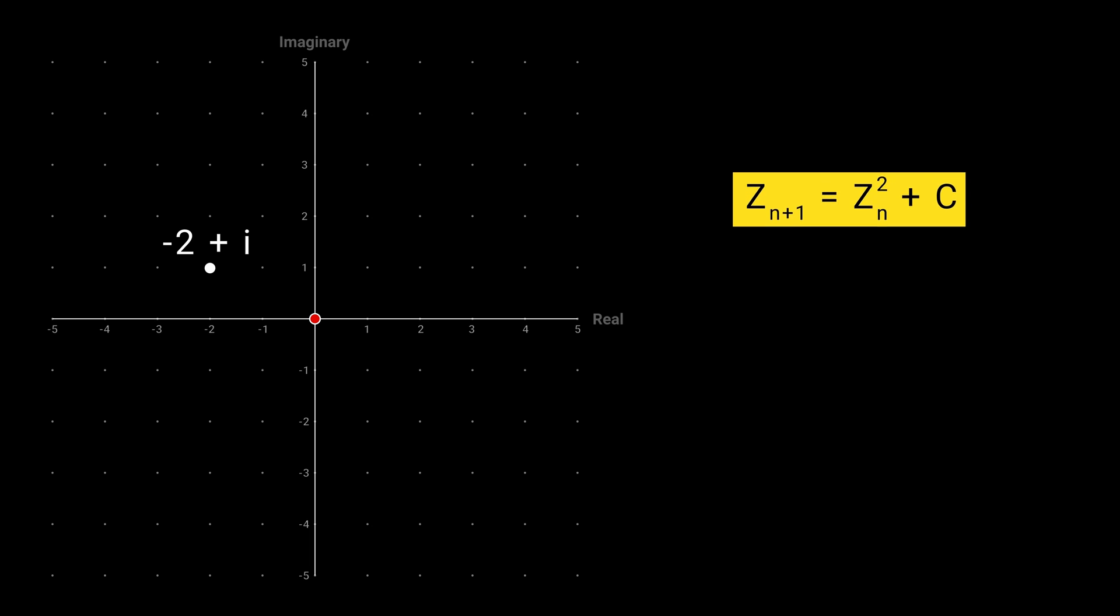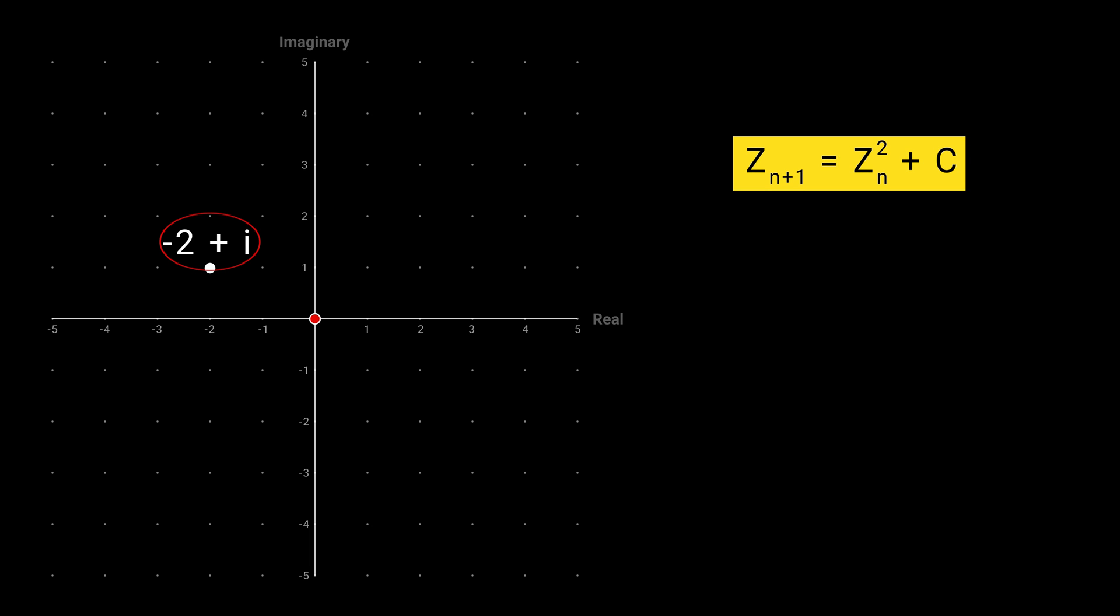The C here represents a complex number. Let's use this complex number, z sub 0 equal to 0, z sub 1 equal to 0 square plus c, which is our number, z sub 2 equal to that squared plus our number. When we do this for a while, we can see that the number is growing and growing. It's therefore not in the Mandelbrot set. So we color it a shade of red.